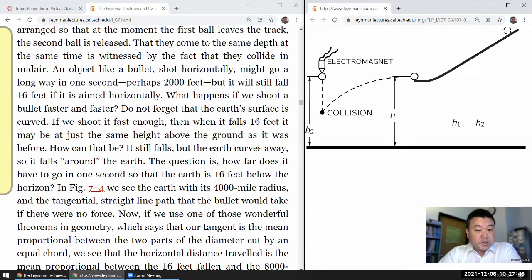On the horizontal track is a ball which is going to be driven for a little distance away. At the same height is a ball which is going to fall vertically. And there's an electrical switch arranged so that at the moment the first ball leaves the track, the second ball is released. That they come to the same depth at the same time is witnessed by the fact that they collide in mid-air. An object like a bullet shot horizontally might go a long way in one second, perhaps 2000 feet, but it will still fall 16 feet if it is aimed horizontally. What happens if we shoot a bullet faster and faster? Do not forget that the Earth's surface is curved. If we shoot it fast enough, then when it falls 16 feet, it may be at just the same height above the ground as it was before. How can that be? It still falls, but the Earth curves away. So it falls around the Earth.